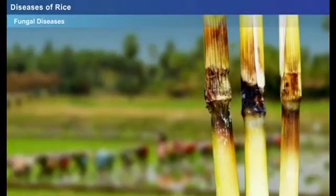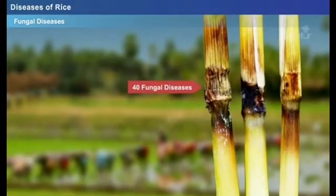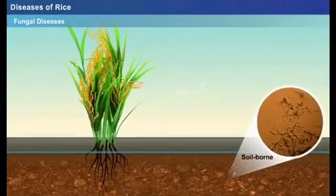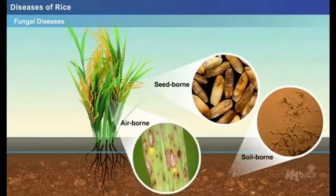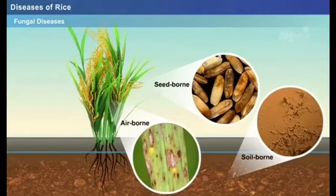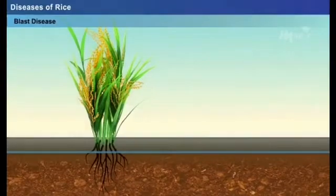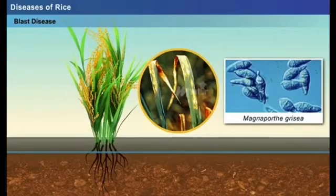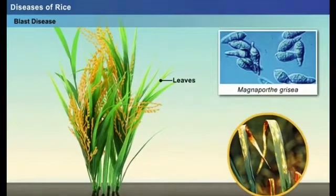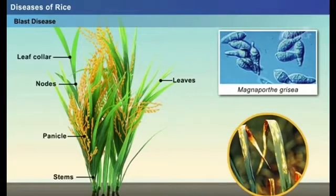Fungal diseases: there are approximately more than 40 fungal diseases of rice. They may be either soil-borne, seed-borne, or air-borne. The most commonly occurring fungal disease is blast disease, caused by the fungus Magnaporthe grisea. The fungus infects the plant and produces lesions on all parts including leaves, leaf collar, nodes, stem, panicle, and grains.